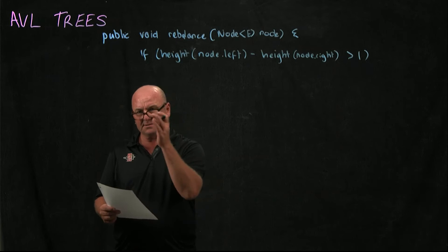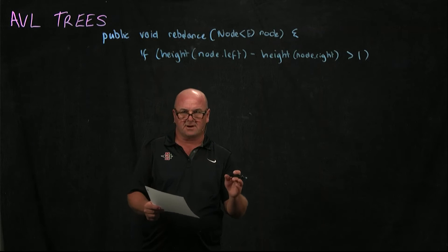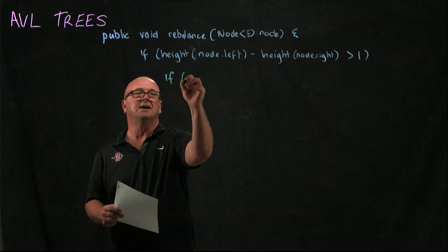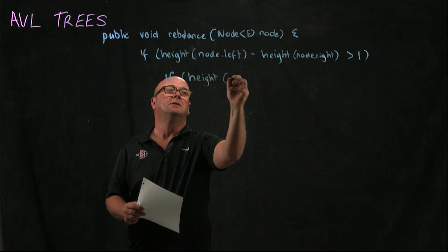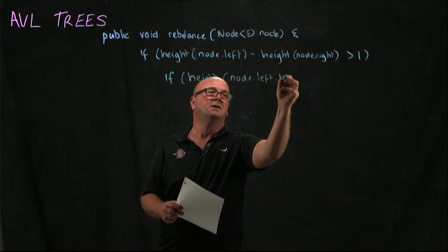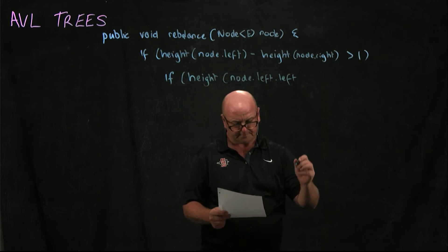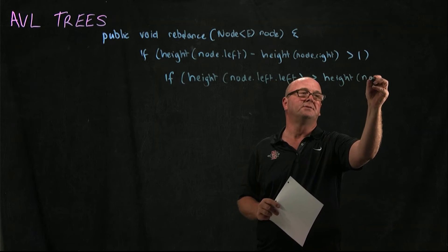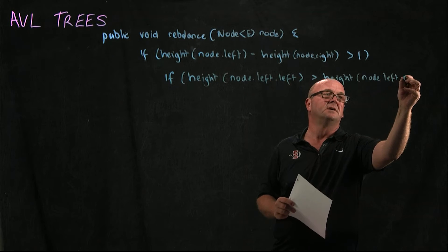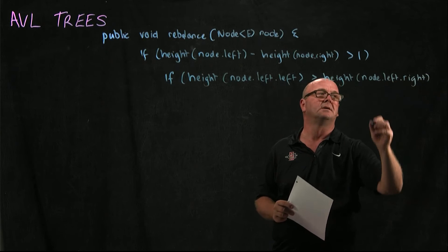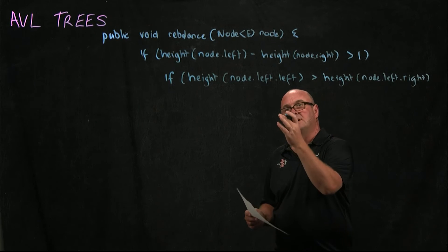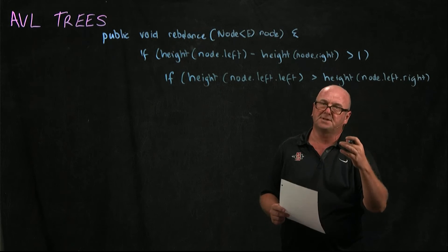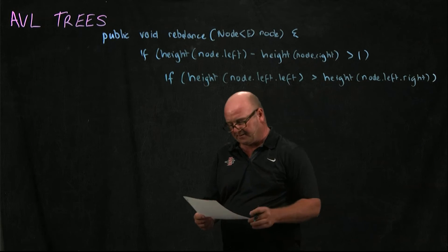So we can check our left child's left subtree and our left child's right subtree and figure out where the imbalance has occurred. So we can say, if height of node.left.left is greater than height of node.left.right, so if the node's left child's left subtree is bigger than the node's left child's right subtree, then we need to do a right rotation.